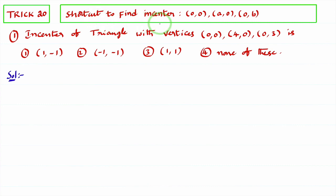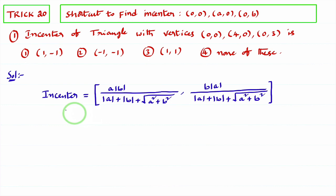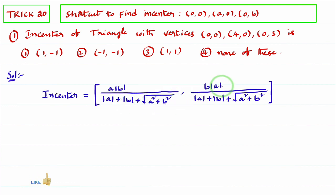Shortcut to find the incenter of a triangle when the given vertices are of the form (0,0), (a,0), (0,b). The formula is: incenter = ( a·|b| / (|a| + |b| + √(a² + b²)),  b·|a| / (|a| + |b| + √(a² + b²)) ).